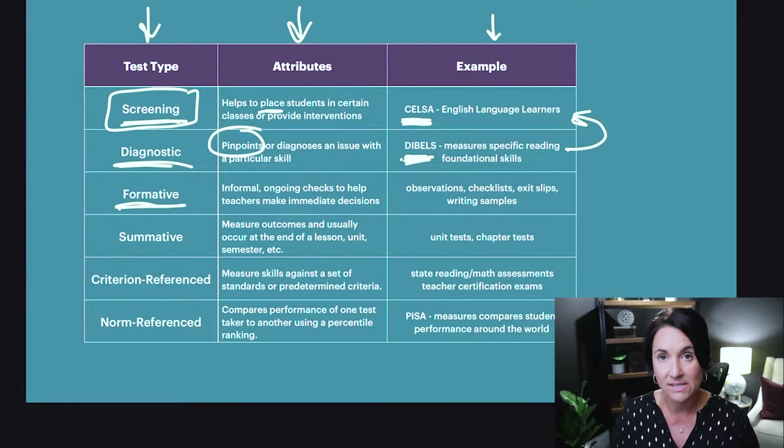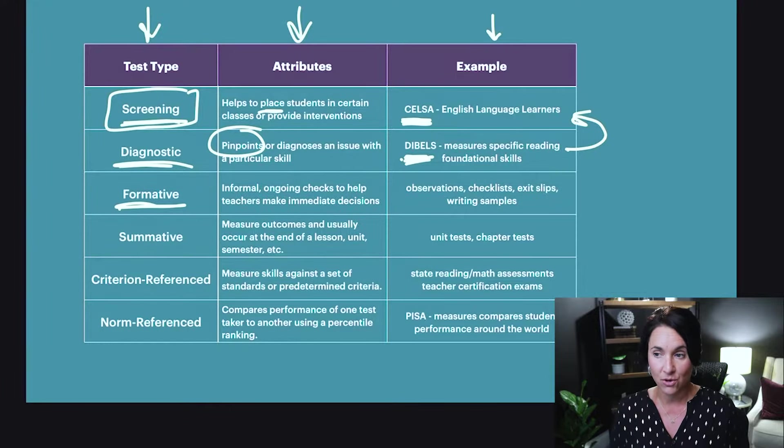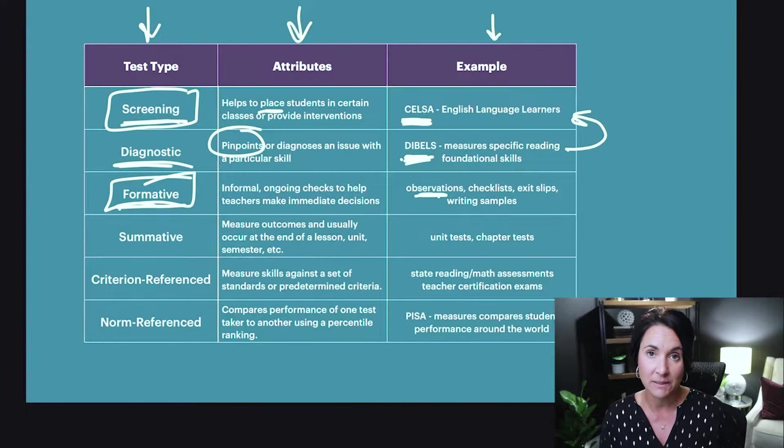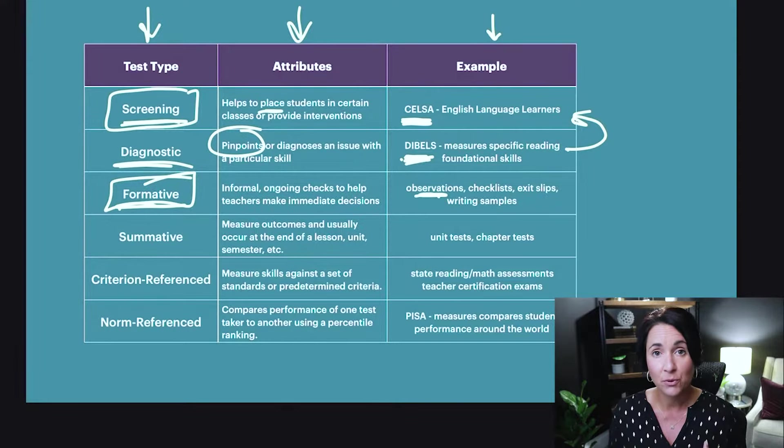Then we move to formative assessments, which are used to inform instruction. Formatives are typically informal, ongoing assessments — constantly happening throughout the day and throughout the lesson. The teacher is observing, using checklists, looking at writing examples. This is what you do every day in the classroom and you're making decisions on the fly. For example, you might use a formative assessment to group students that day using flexible grouping based on skills — moving kids in and out of groups based on your observations.